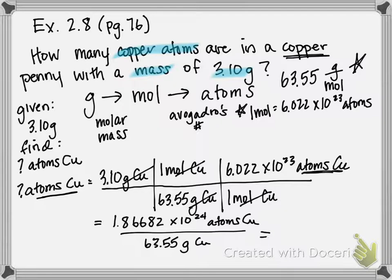If you divide those two further you should get 2.94 times 10 to the 22 copper atoms. And that is with significant figures already rounded. So there you have it, this is your final answer.